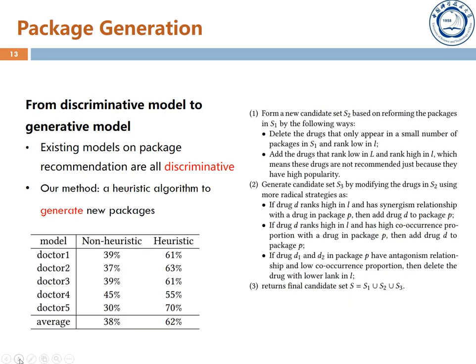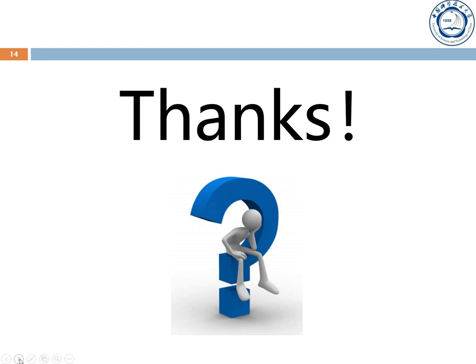Furthermore, we find that existing models on package recommendation are all discriminative models. Discriminative models can only recommend drug packages that exist within the database, which cannot meet the needs of some new patients. So in our work, we propose a heuristic algorithm which combines the existing packages, the personalized drug prediction lists, and drug interaction metrics to generate new packages. We selected some test samples and handed them to five doctors to mark the packages they preferred, and the result proves the effectiveness of our method. This is the end of my presentation. Thank you for your listening.